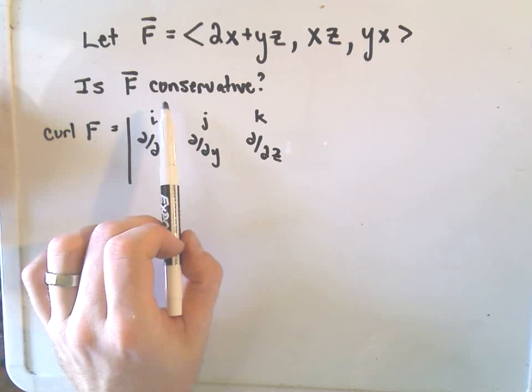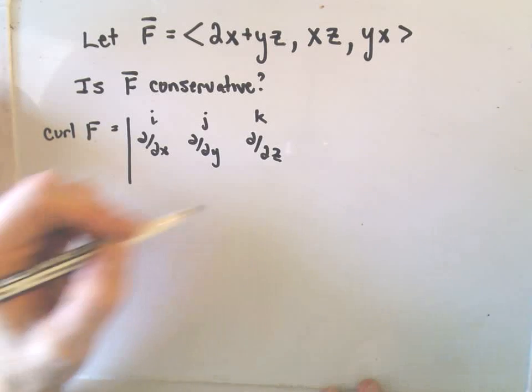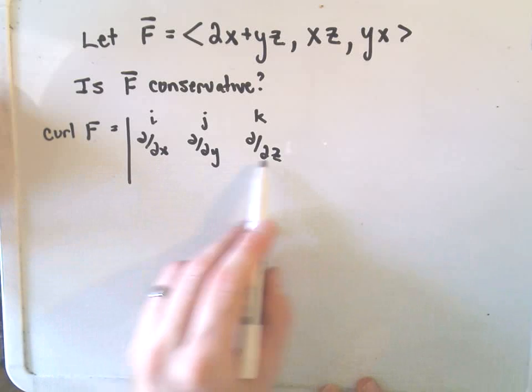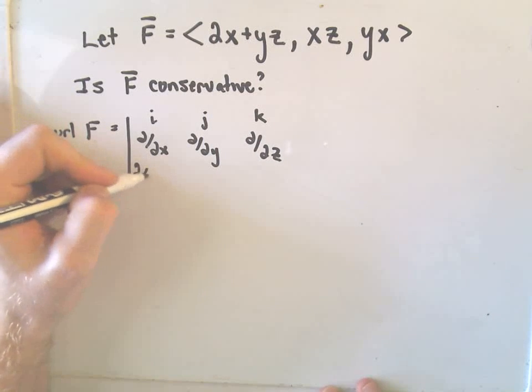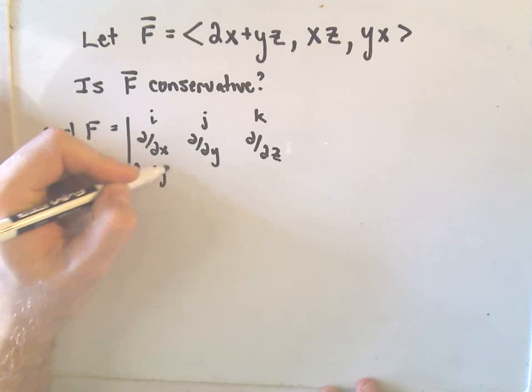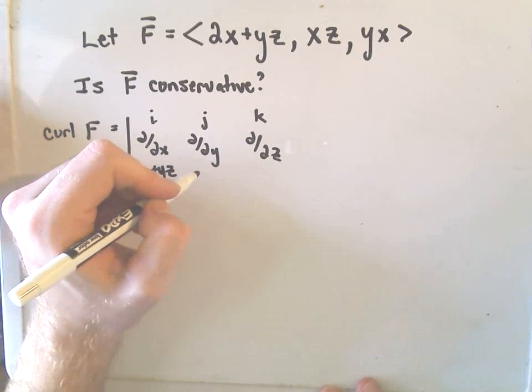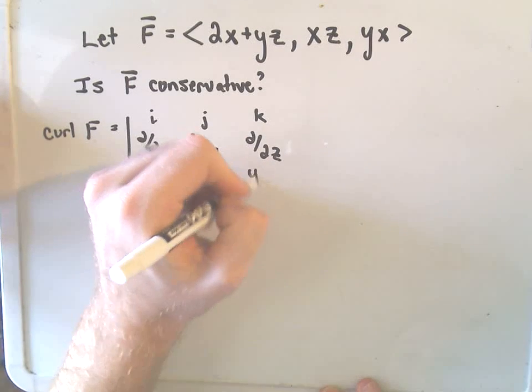Remember to test if F is conservative, we just take the curl of the vector field, and if it's zero, then in fact it is conservative. So I went ahead and wrote down the top row. In the bottom row I'm just going to put the components: 2x plus yz, partial with respect to y, we'd have xz, and then we'll stick yx.